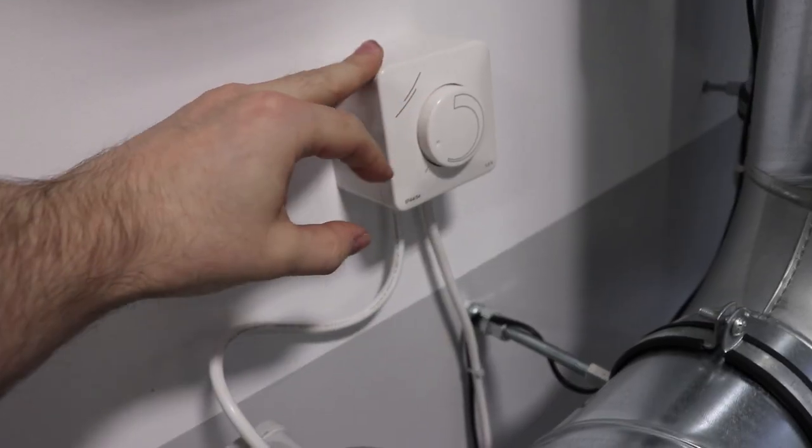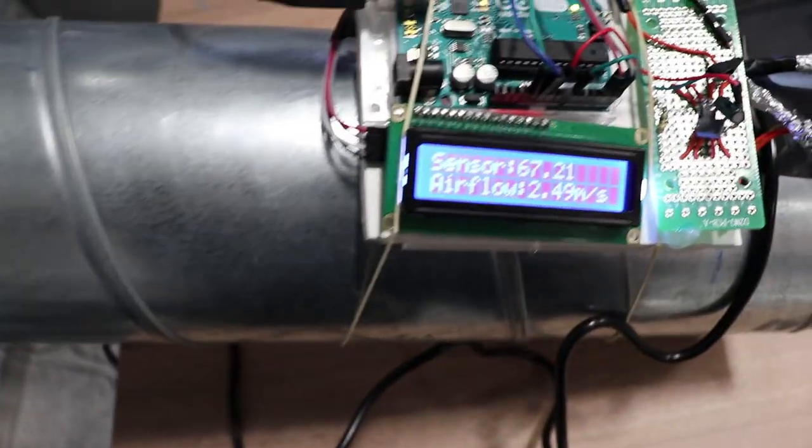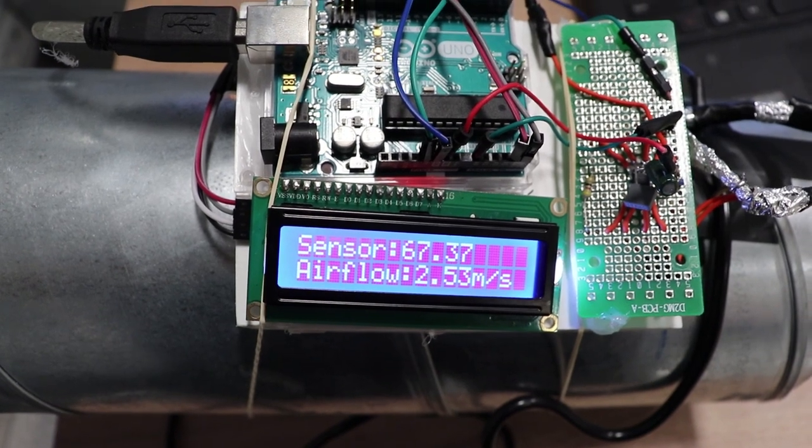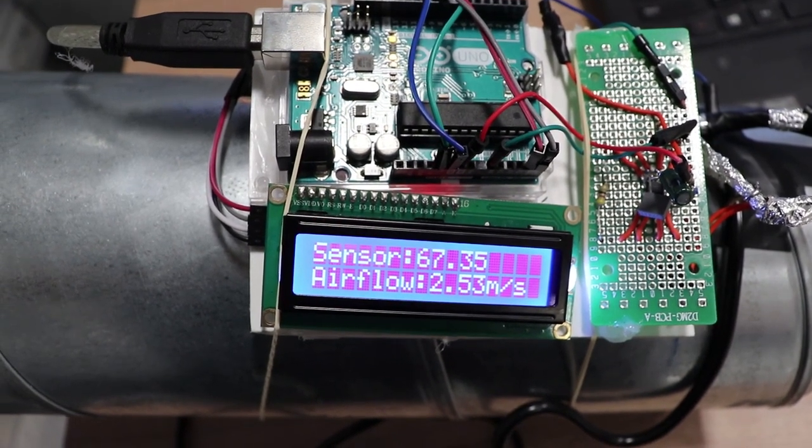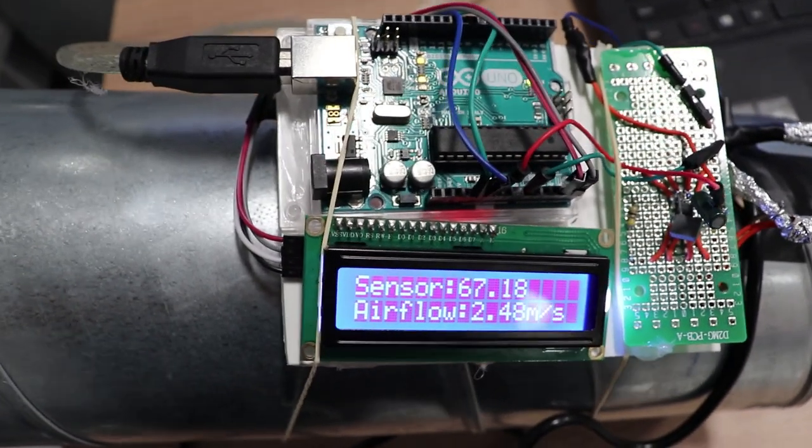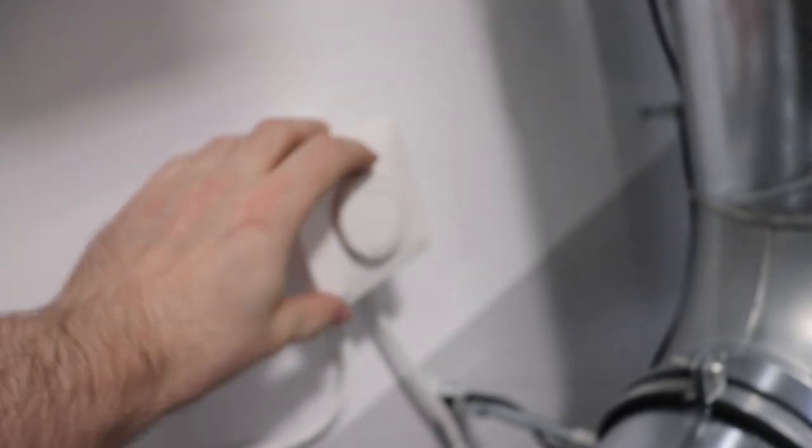From my previous experiments I know that this fan at minimal controller setting has output of 2.5 meters per second and on maximum setting 7.2 meters per second. Based on this data and sensor readings at different fan settings, I determined the equation for a linear pattern.